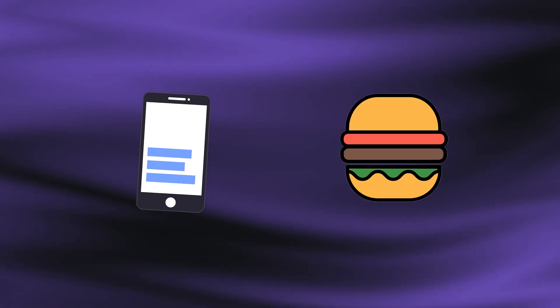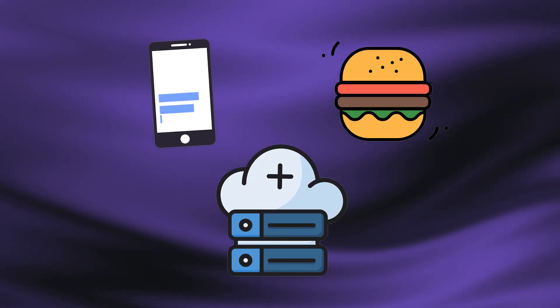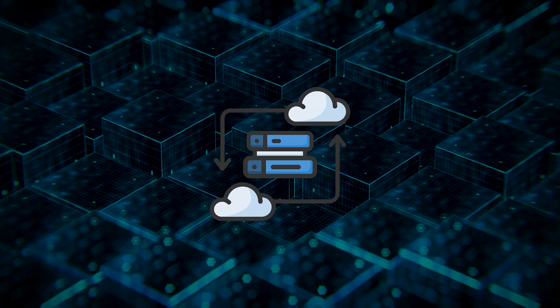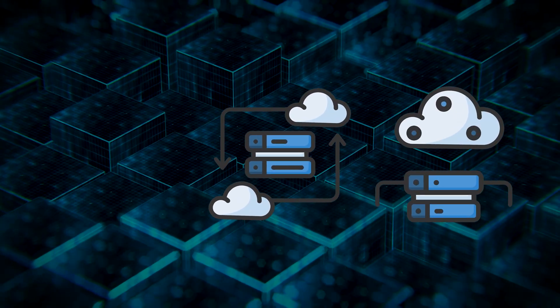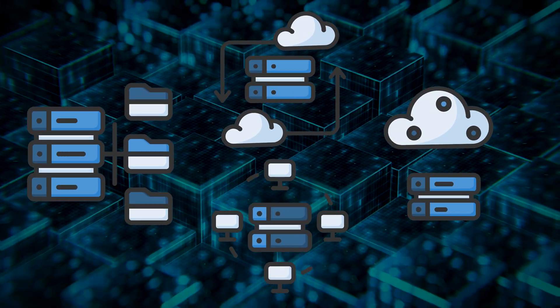Lastly, number five, application servers. Application servers run software applications and process business logic. When you use a mobile app to check your bank balance or order food, you're communicating with application servers that process your request and return results. Most modern services use multiple types of servers that work together. For example, a simple online shopping experience might involve web servers for the interface, database servers for product information, file servers for images, and application servers for processing payments.